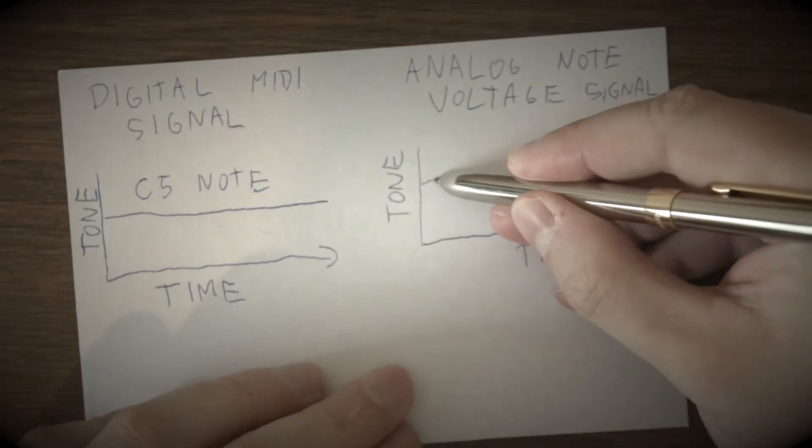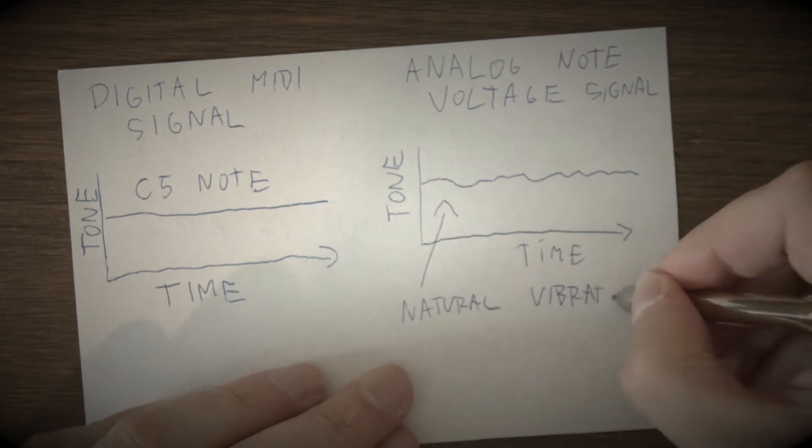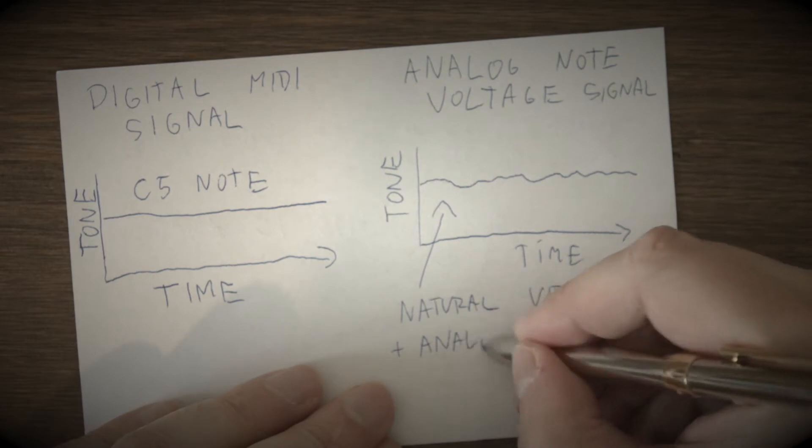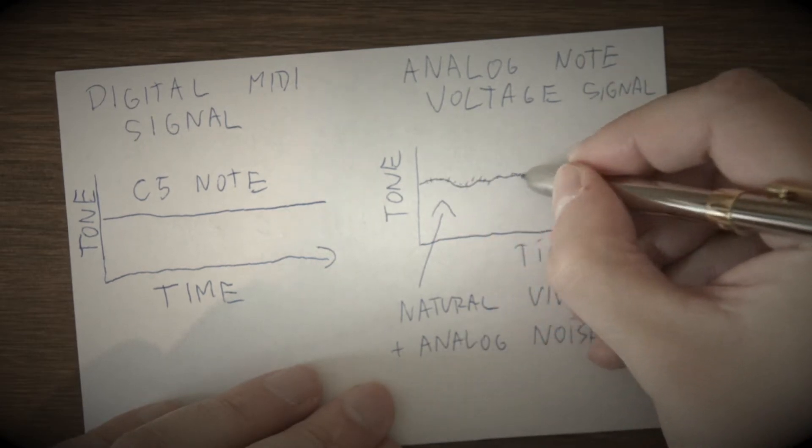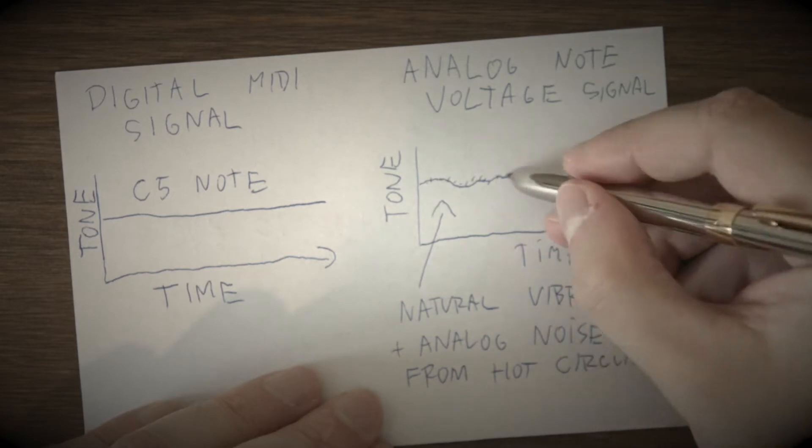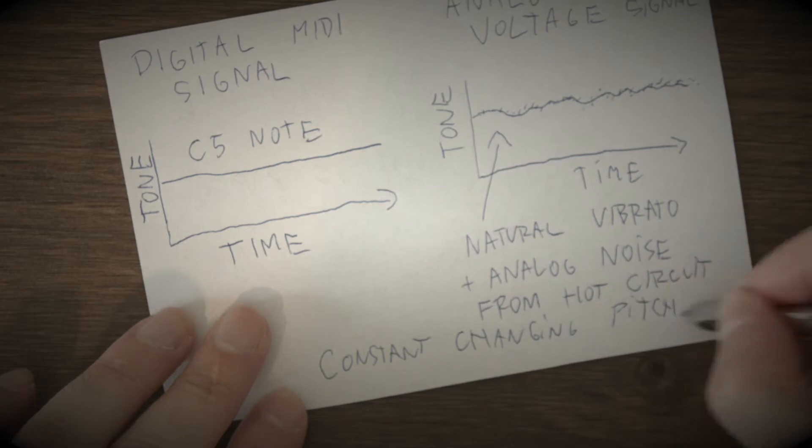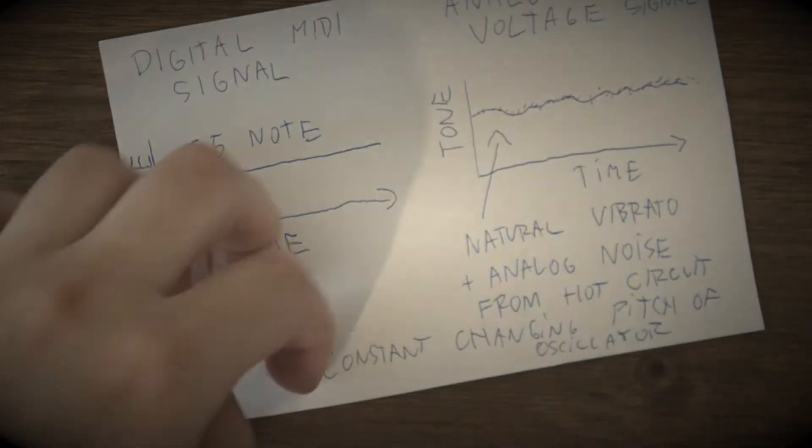While digital MIDI signal is always the same, analog voltage note signal which modulates frequency, or better said note of analog oscillator, is changing in time, not a lot, like 0.1% max, but it causes natural detuning of oscillator. When two oscillators are running together, it creates fat, massive sound and unison type effect.